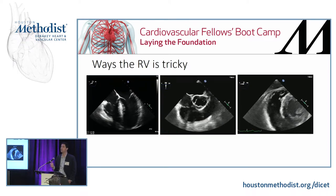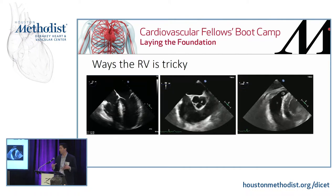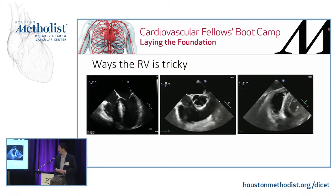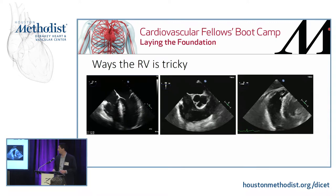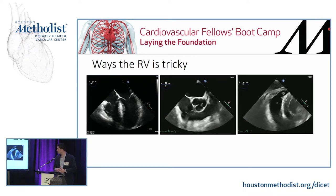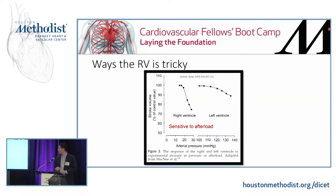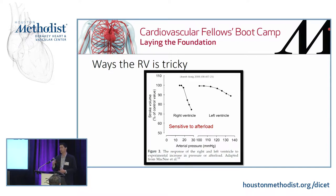The RV is relatively far away from the probe, so that makes it a little tougher to image. It also has an unusual contraction pattern — the free wall squeezes up against the interventricular septum, and the tricuspid annulus swings up and down. The RV is also exquisitely sensitive to loading conditions, particularly afterload. It tends to be more of a volume pump and can handle large swings in volume, but any increase in PVR or afterload causes a significant drop-off in stroke volume — opposite to the LV.